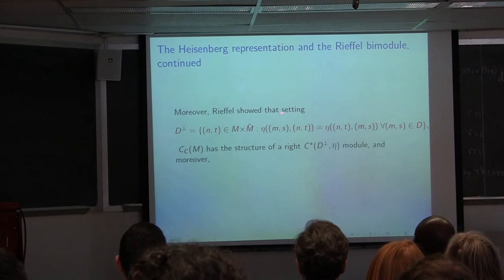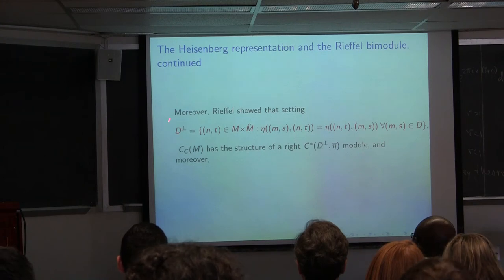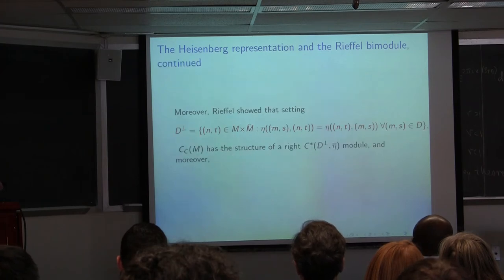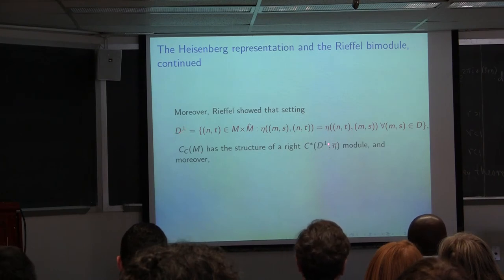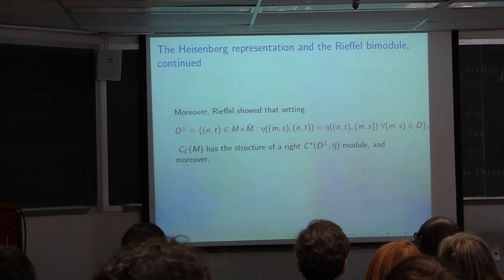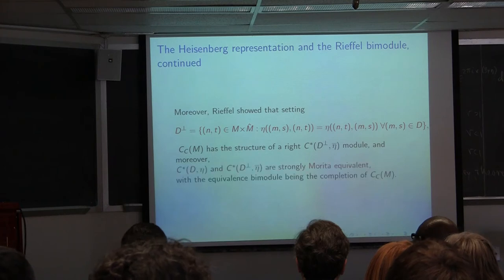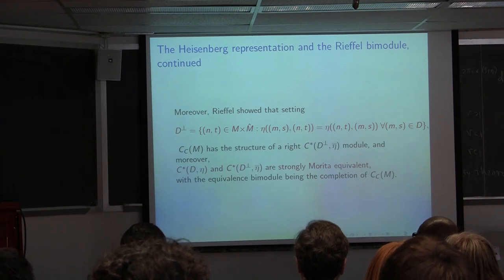Rieffel was able to get a Morita equivalence between C*(D, η) — where D is a lattice of some sort in M and η is a Heisenberg 2-cocycle — and another twisted group C*-algebra C*(D^⊥, η̄), where D^⊥ is defined via the symmetrizer multiplier corresponding to η. These turned out to have the same representation theory (strongly Morita equivalent, though not necessarily isomorphic). You complete continuous functions with compact support on M to obtain the bimodule between them.